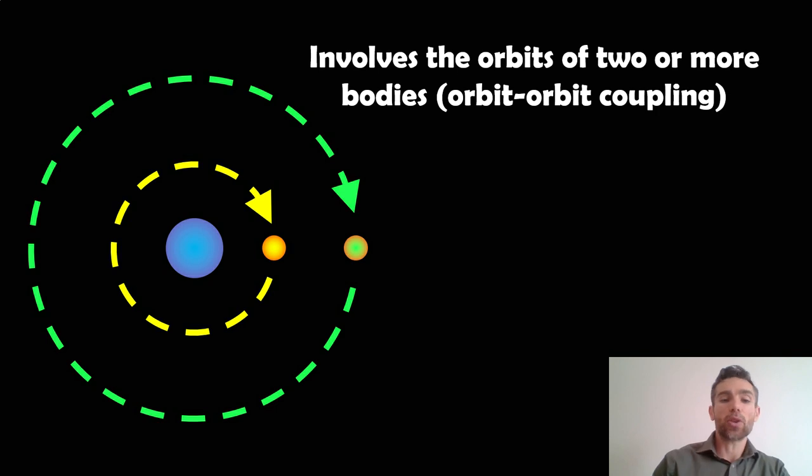Let's say we've got two objects here. We've got a larger object in the center which is the bluey-purple one, then you've got two objects orbiting outside of that with the yellow and green orbits. It could be planets orbiting a star or moons orbiting a planet.